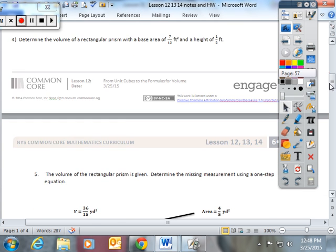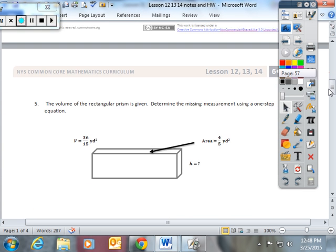I'm going to ask you to flip it over now. And let's look and see what we have here. I love this one. This is the one I was looking for. The volume of the rectangular prism is given. Determine the missing measurement using a one-step equation. So now, I look at what I have. I don't have a length, a width, a height. I only have an area of this base and I have a height. And they gave me the volume.